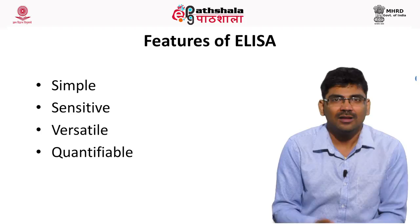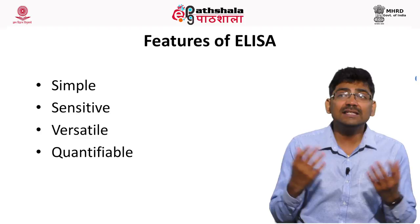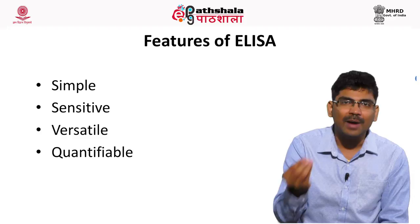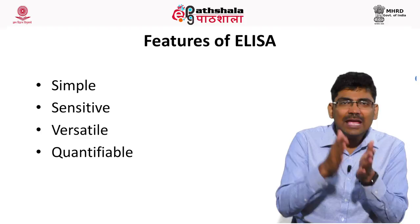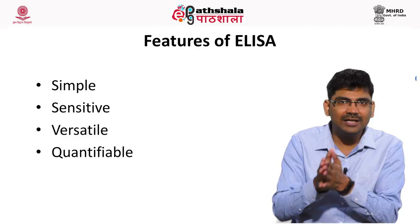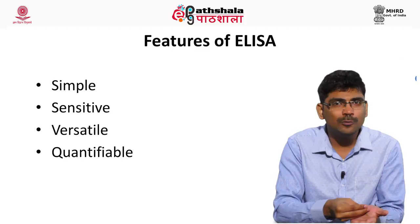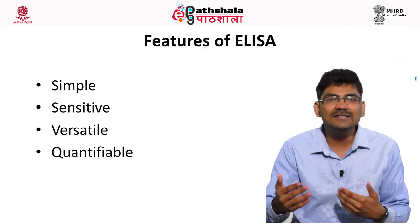ELISA is simple — unlike radioimmunoassay, we do not need radioactive labels; we just use microtiter plates. It is sensitive because there is signal amplification in ELISA, so even a minute concentration of antigen can be detected; the sensitivity is similar to radioimmunoassay. It is versatile because the same analyte can be detected by various systems. It is quantifiable because the color produced can be read by a multichannel spectrophotometer, typically at 450 nanometers depending on the enzyme label used. The data can be stored and analyzed statistically for future reference.